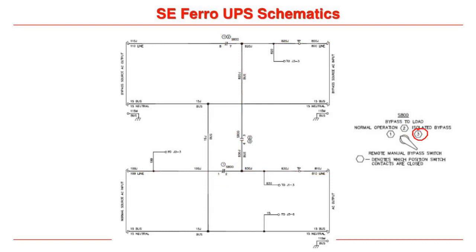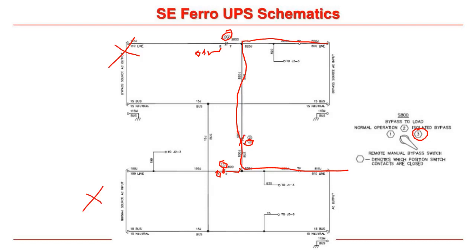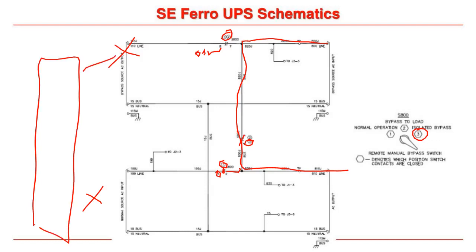The only difference with position three is the bypass-to-UPS switch also opens, so no power is going to the UPS. With the RMBS in isolated bypass — position three — and after you lock out and tag out the AC input, battery input, and output from the UPS, you can completely remove and replace the UPS while still keeping your load circuits powered. This also allows maintenance to be performed on the UPS itself very easily.